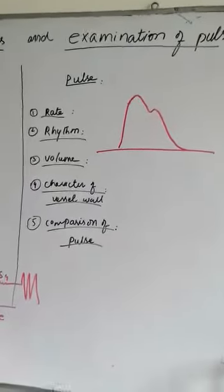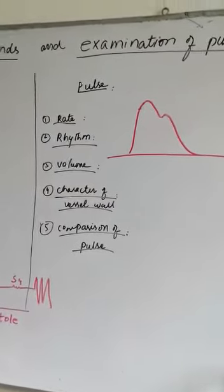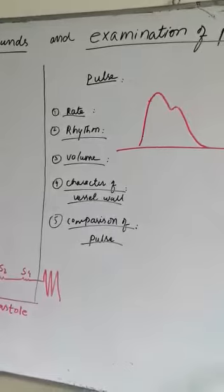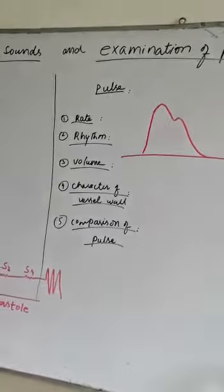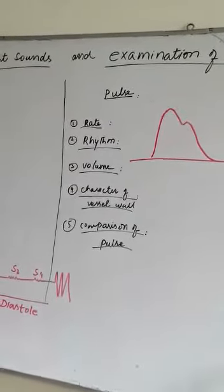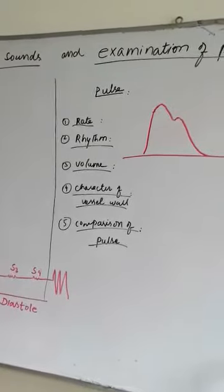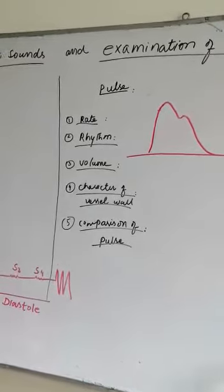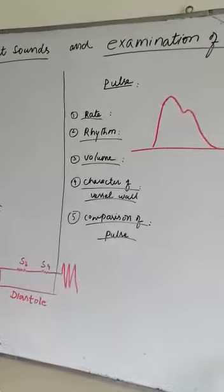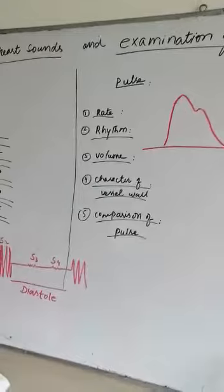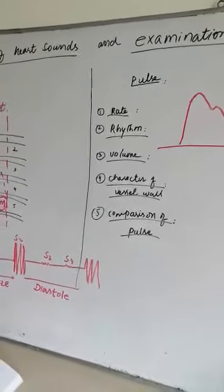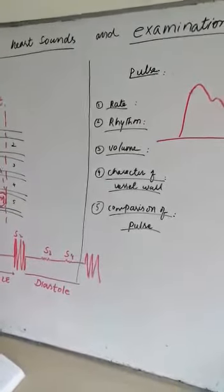For examination of the pulse, the subject must be sitting in a comfortable posture. The first step is taking consent — you introduce yourself, saying your name is Dr. XYZ, and ask permission to examine the pulse. You explain the procedure: you will place your hand on their wrist, it will cause no discomfort, and they should remain relaxed throughout. You will approach the subject from the right side and position the forearm properly.